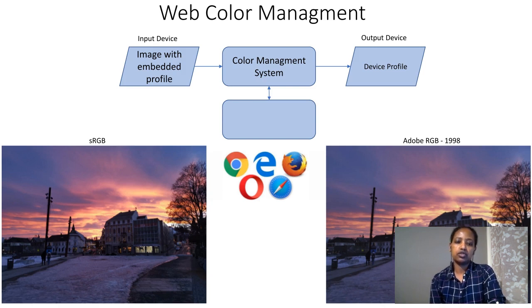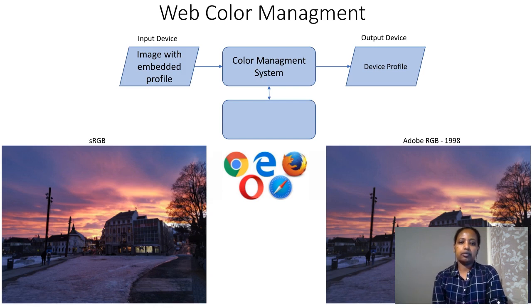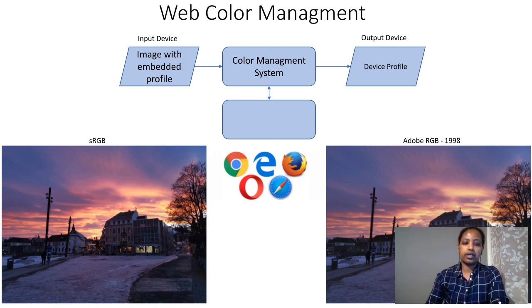Most browsers assume sRGB as their standard color space, which means every untagged image will be assumed to be sRGB. Some browsers, like Firefox, also expand the image colors to the display gamut, unless the user specifies it manually in the browser settings. Currently, the supported gamuts are sRGB and AdobeRGB.